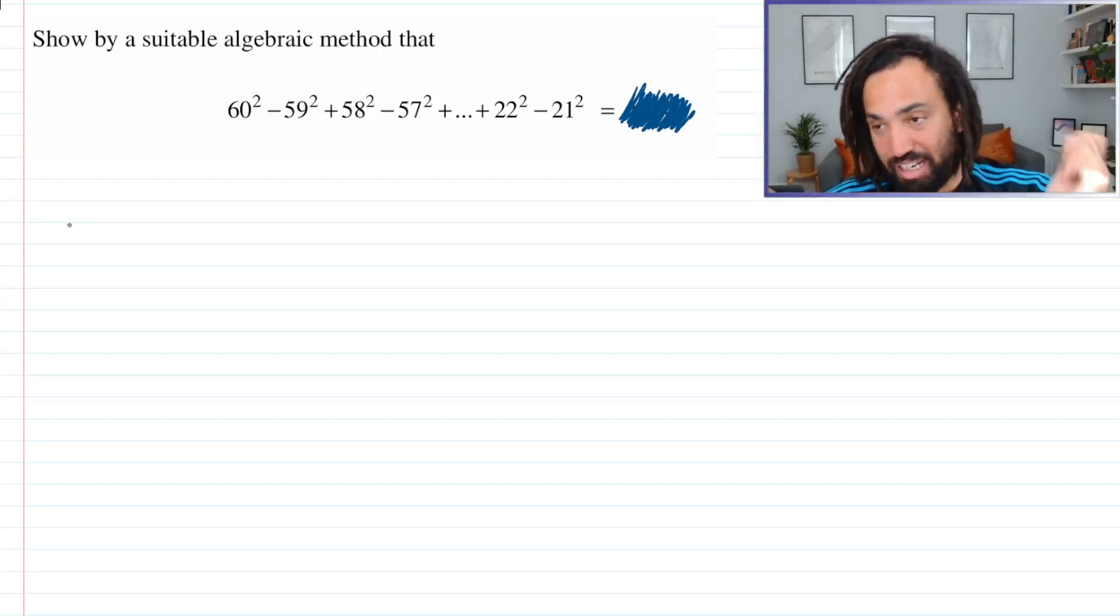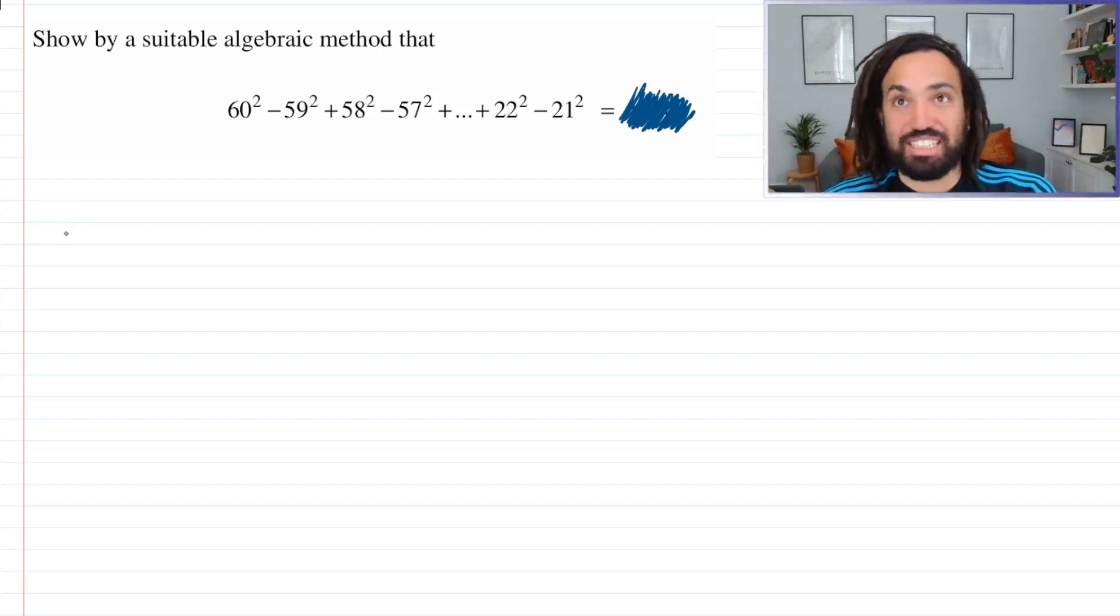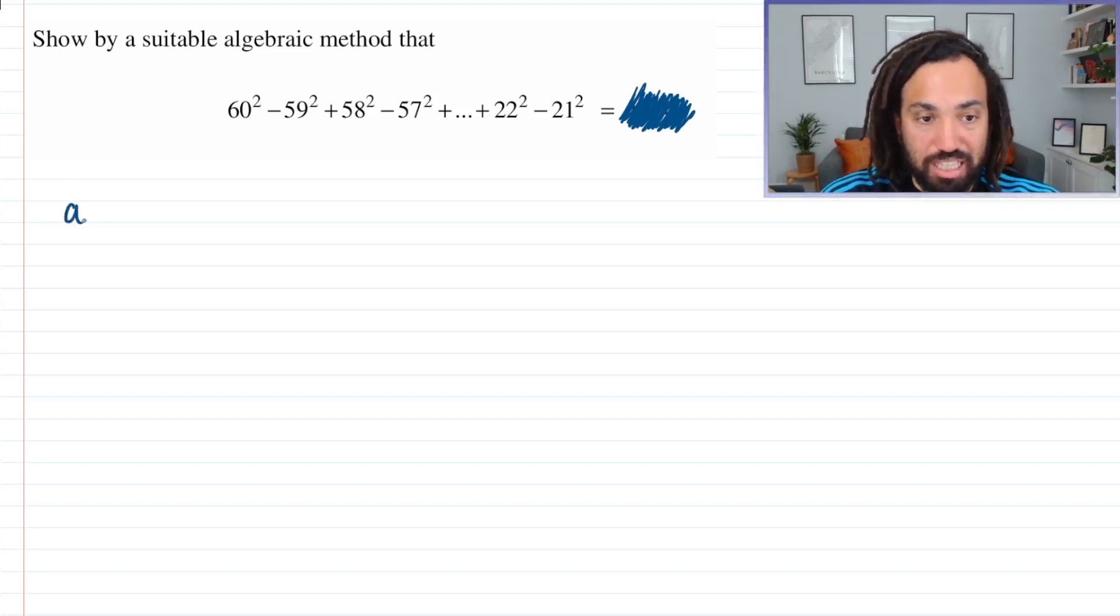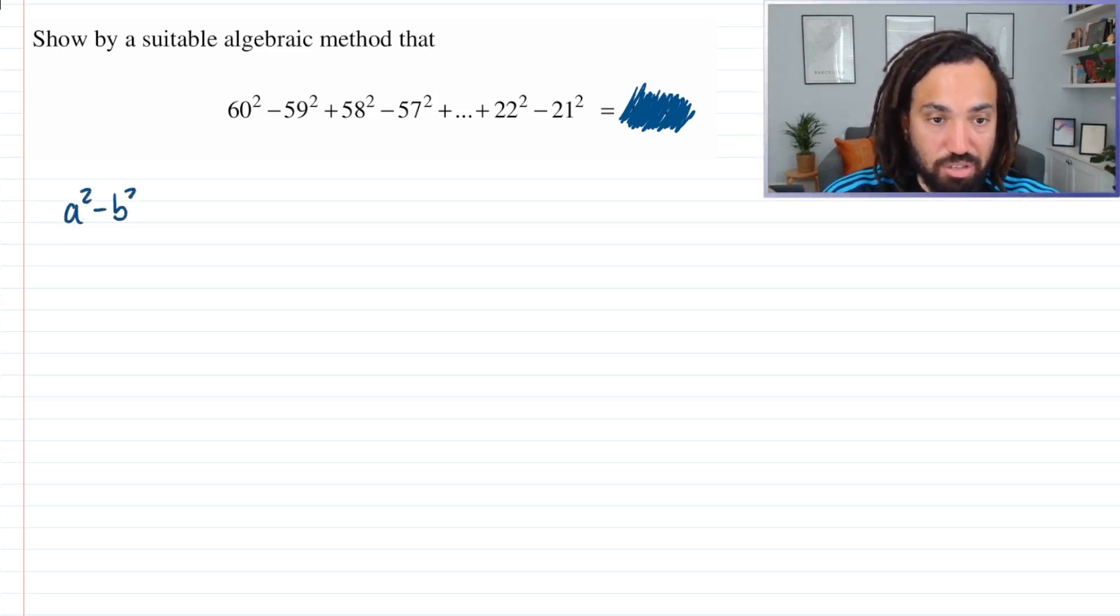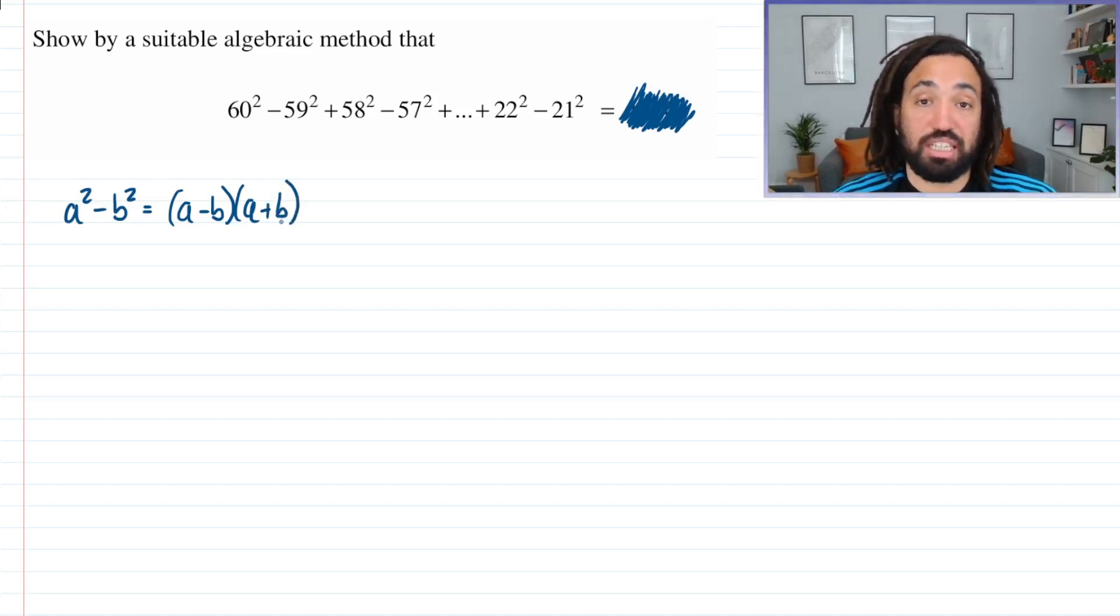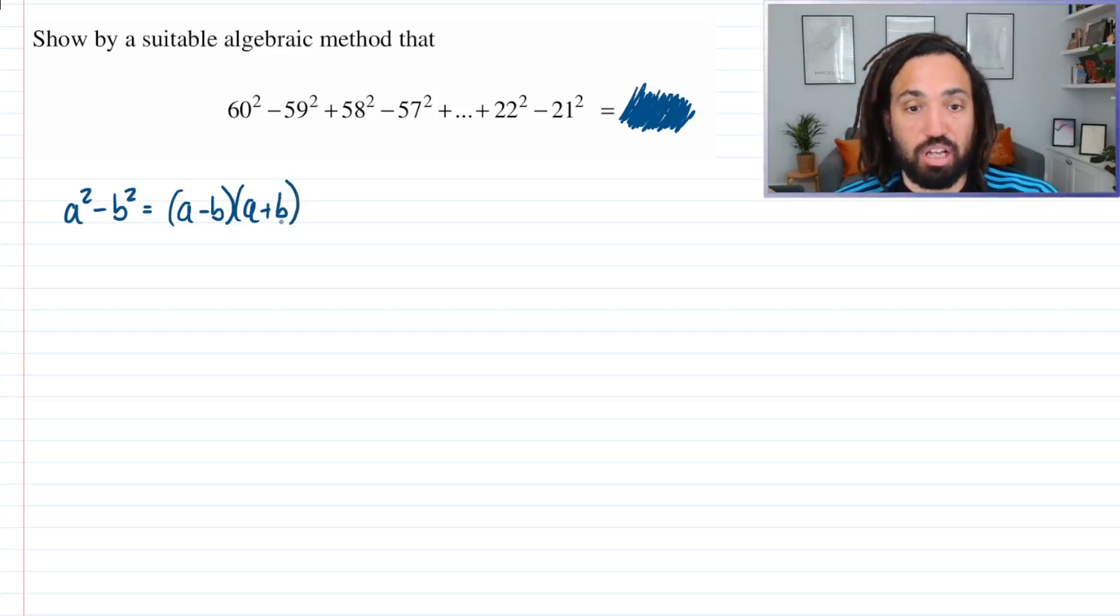that everyone should know - super helpful - and that is that A² - B² is equal to (A - B)(A + B). This is called the difference of two squares and like I say, it is fundamental for algebra.